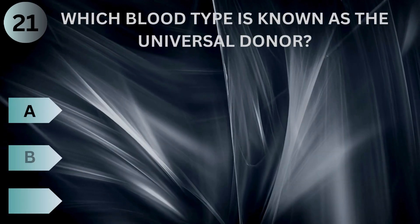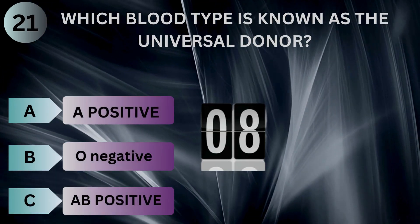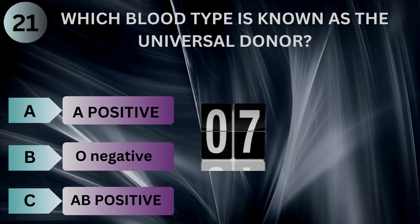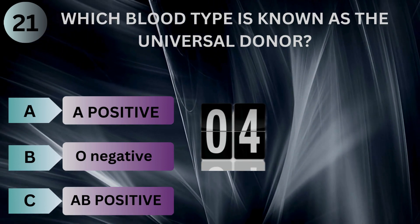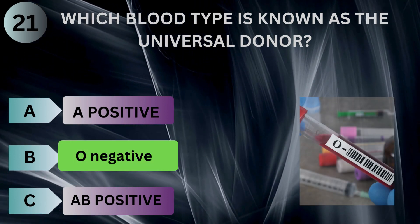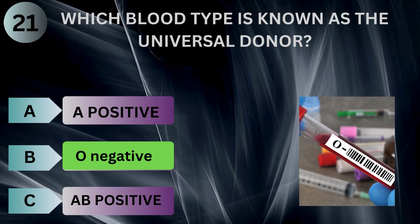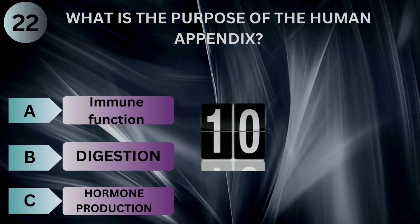Which blood type is known as the universal donor? What is the purpose of the human appendix?